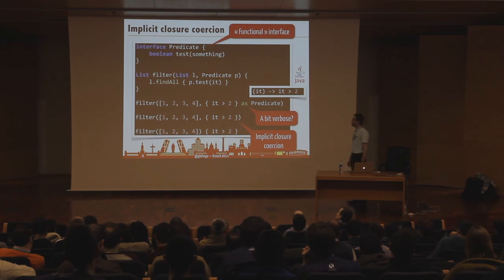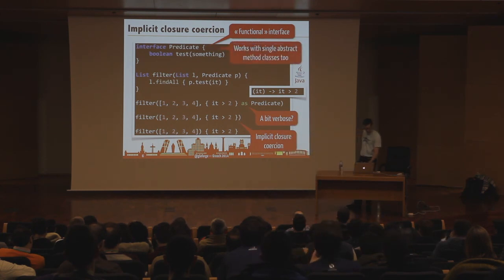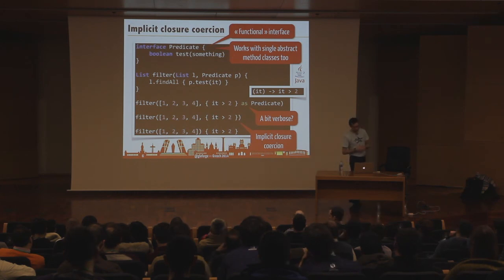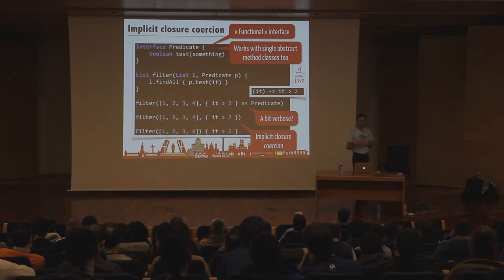We managed to have something even slightly shorter than the Java equivalent. The difference from Java 8 is that Java only works with interfaces — even an abstract class with one abstract method wouldn't work there. But with Groovy, we also made implicit closure coercion work with abstract classes.